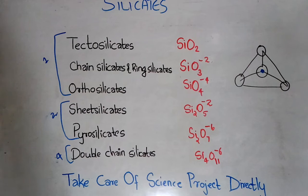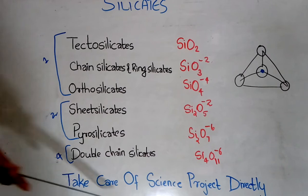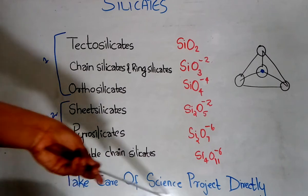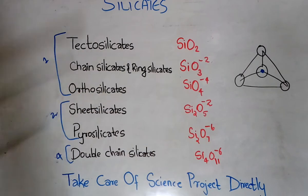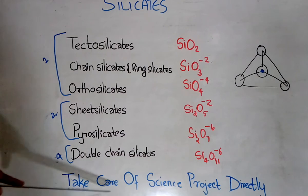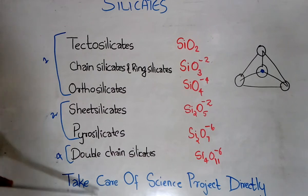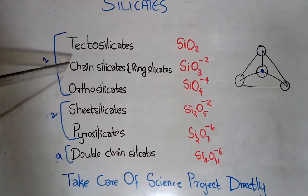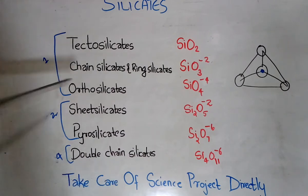In my previous videos, I have given you one method to learn all of this in order by making a certain sentence. To remember the silicates, I have made the sentence: 'Take care of science project directly.' You should remember that chain silicates and ring silicates come together — since I have included only C, standing for chain silicates.